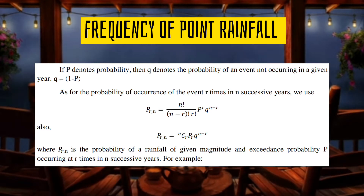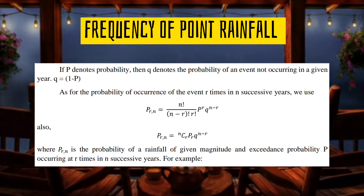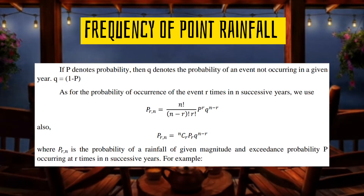As for the probability of occurrence of an event R times in n successive years, we use: PRN equals n factorial over (n minus R) factorial times R factorial, times P raised to R times Q raised to n minus R. PRN is the probability of a random hydrologic event or rainfall of given magnitude and exceedance probability P occurring R times in n successive years.